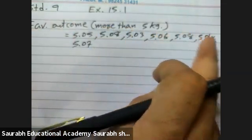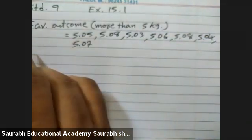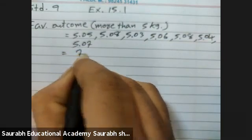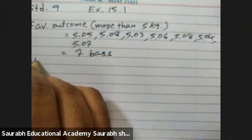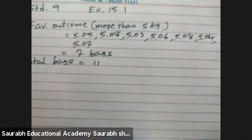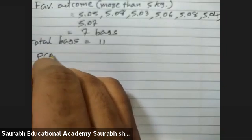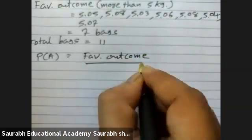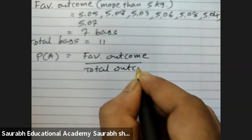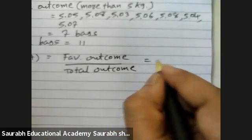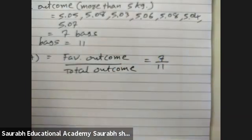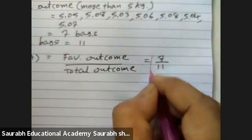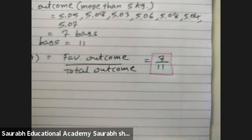Total: 1, 2, 3, 4, 5, 6, and 7 — that is 7 bags. And total bags? 11. So probability P of A equals favorable outcome upon total outcome, which is 7 upon 11. The probability of getting more than 5 kg of flour is 7 by 11.